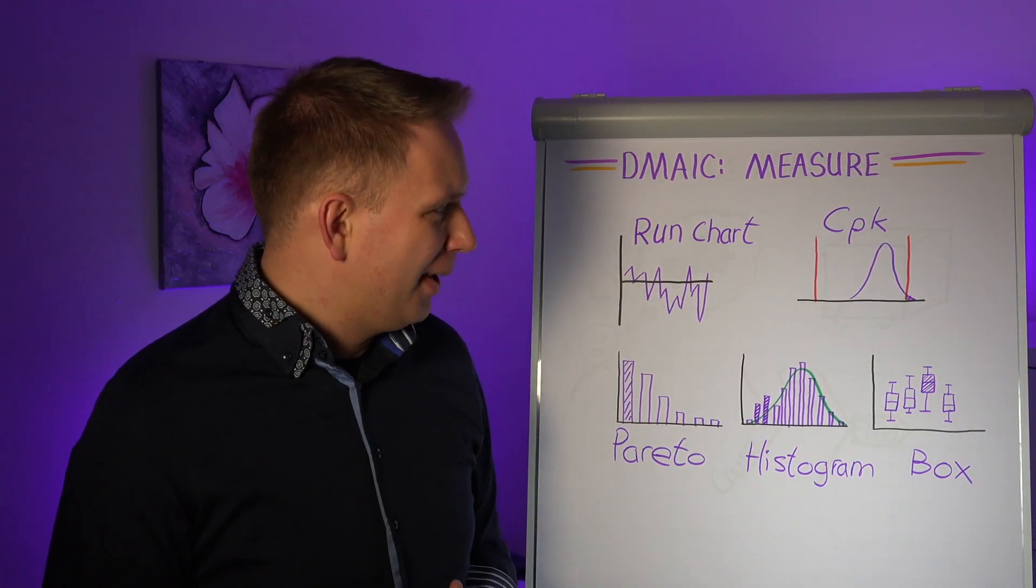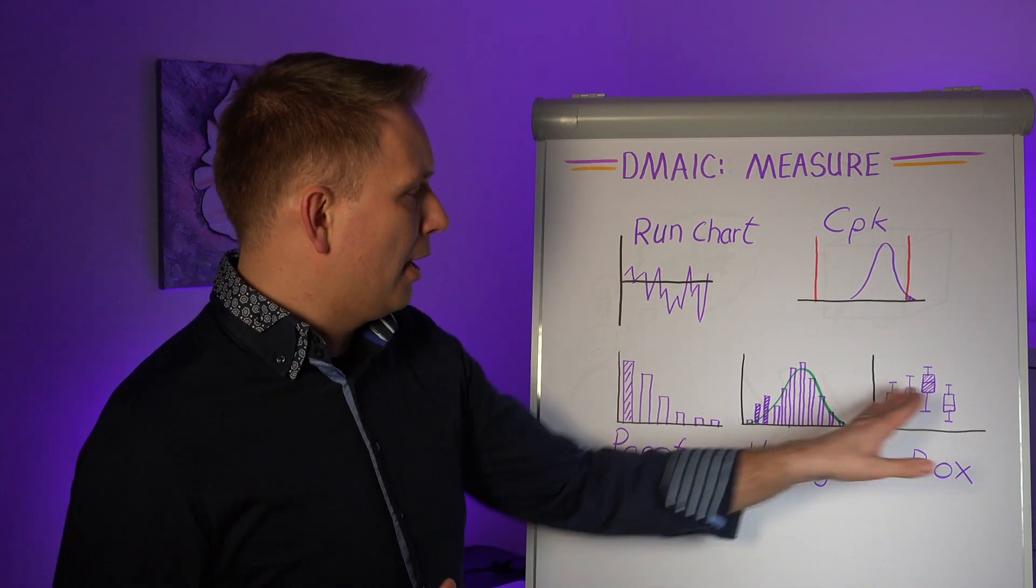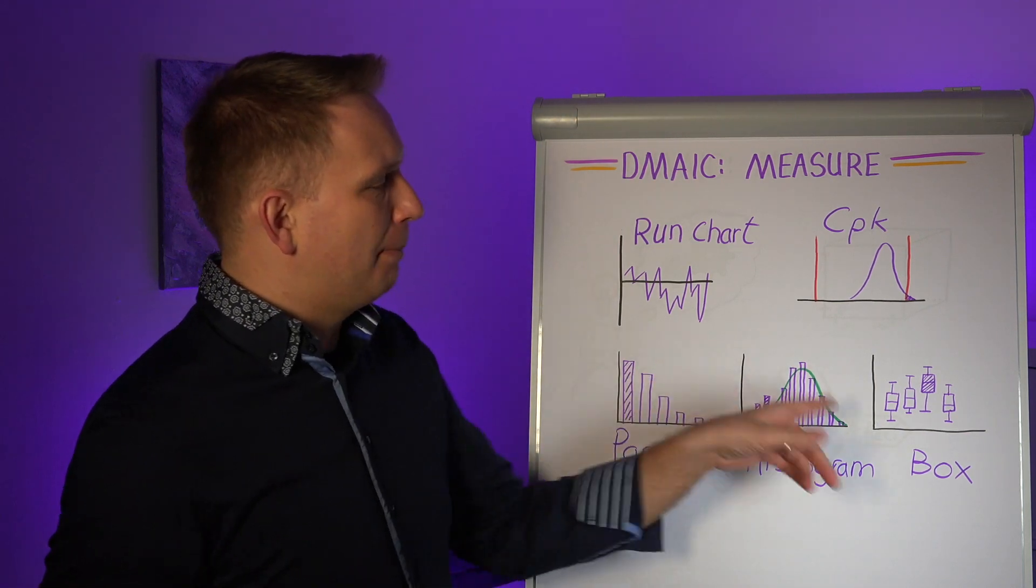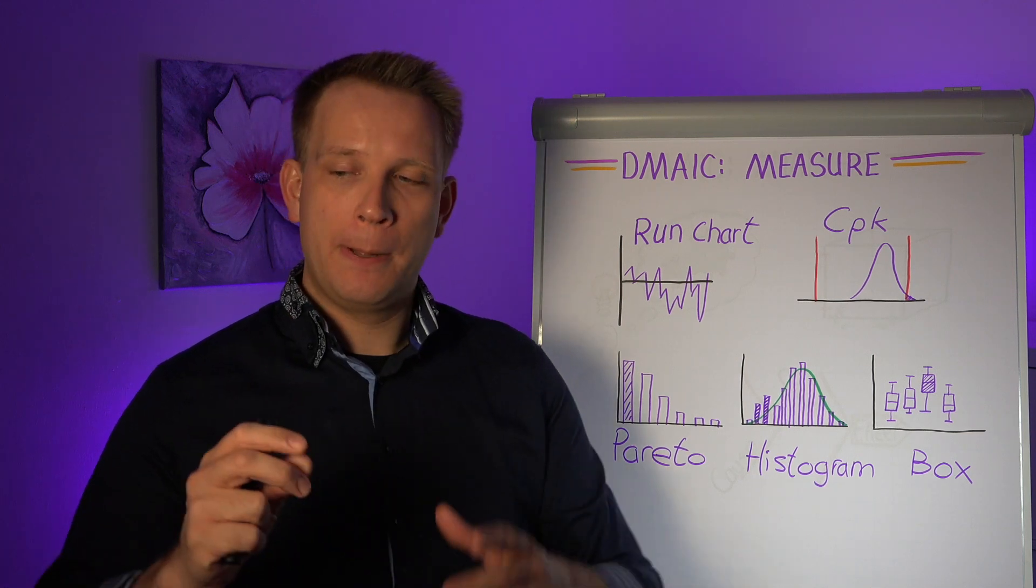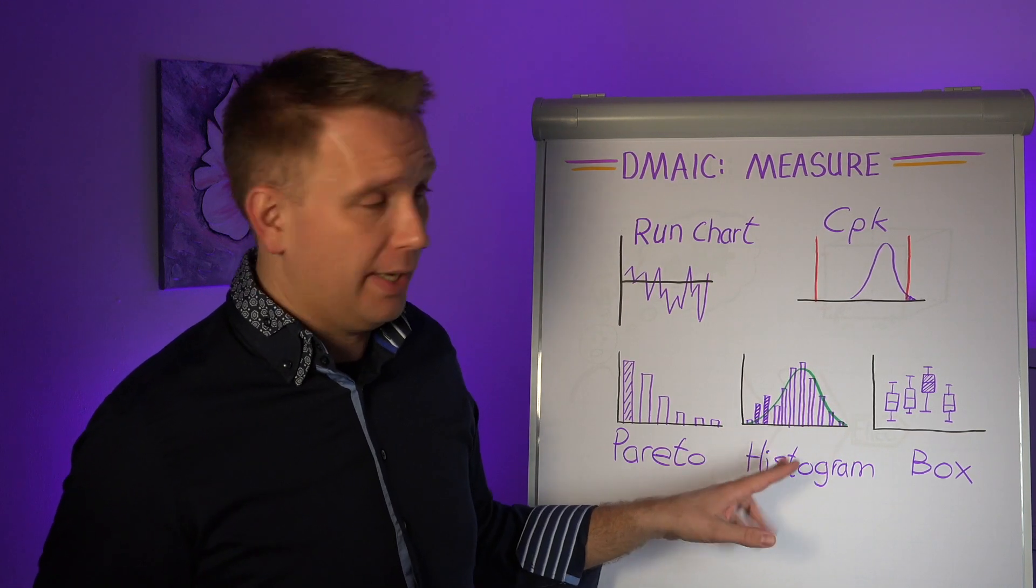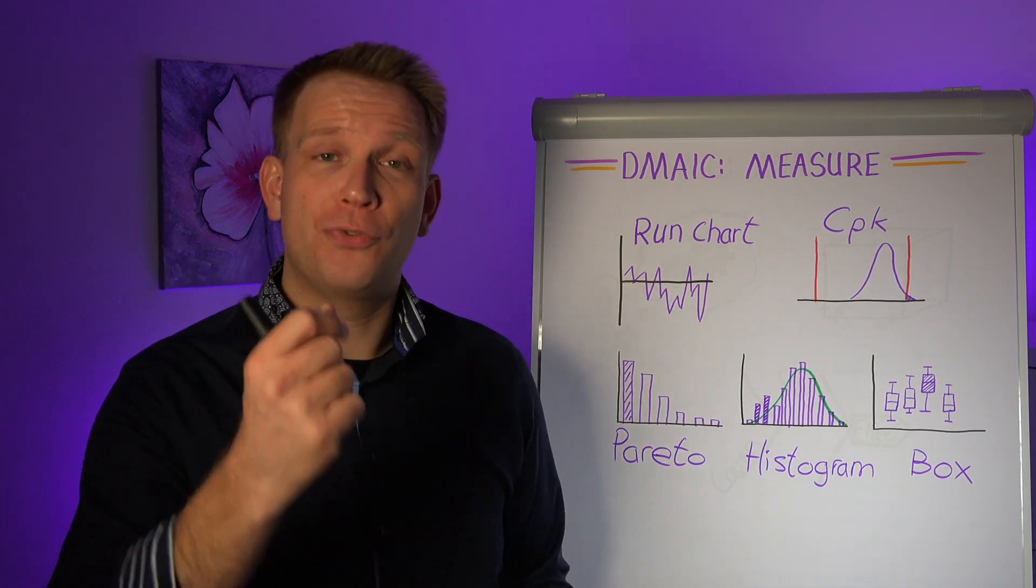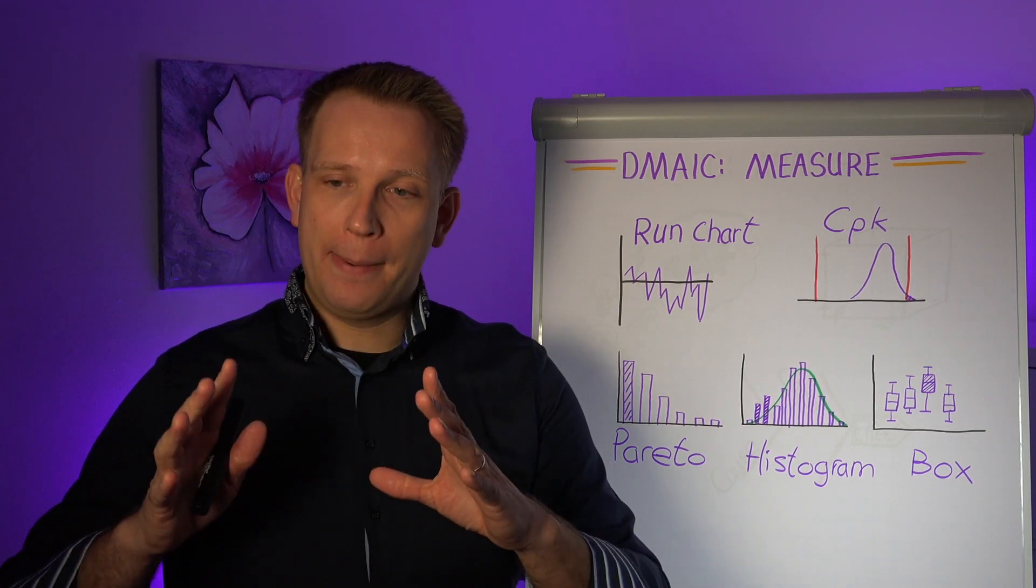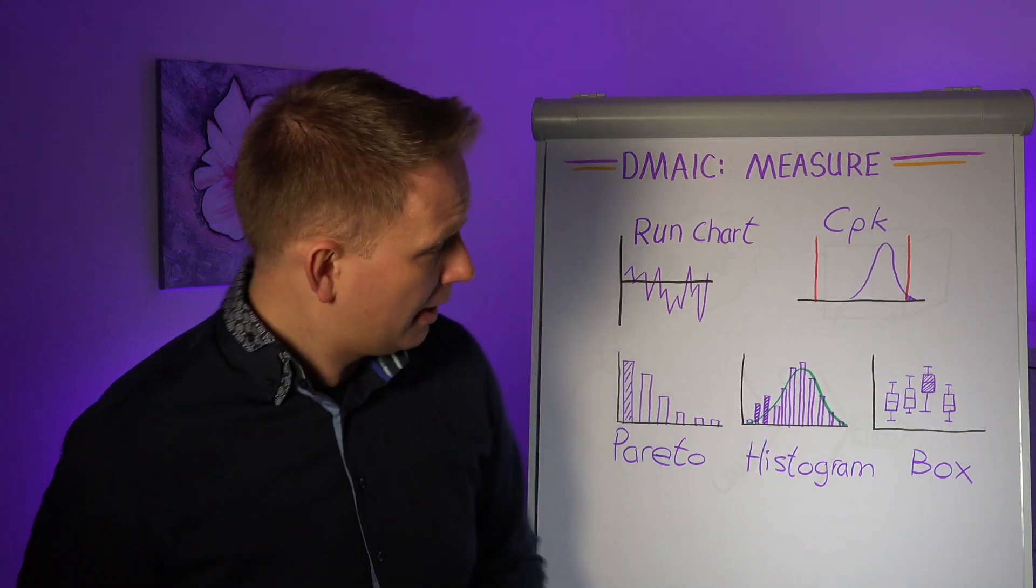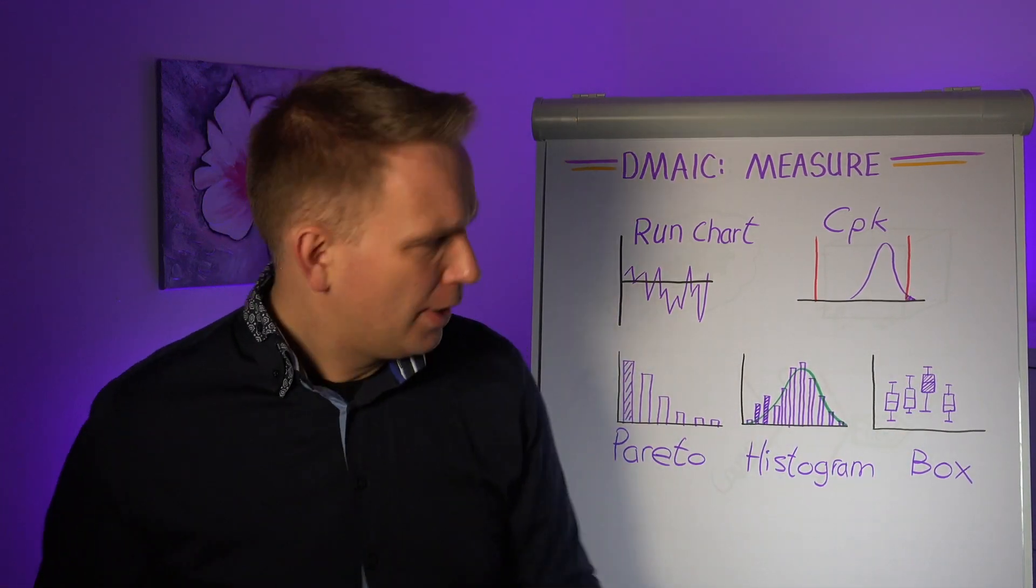Now a box plot that is slightly different, this is a comparison tool. So here again we slice the data in a certain way, a bit like the Pareto, but in a box plot we don't slice it on the defect mode or something like that. We definitely don't just slice it into categories like a histogram, but we put it into sort of a factor that we think contributes. So for instance, we might want to group all of our data into, we have four shifts in the factory, and shift A, B, C and D, they have produced these products.